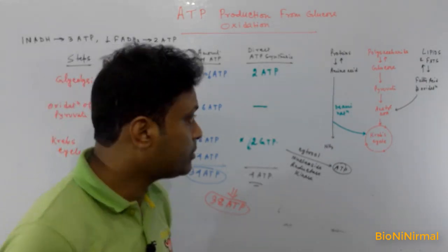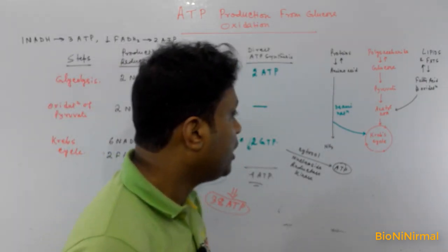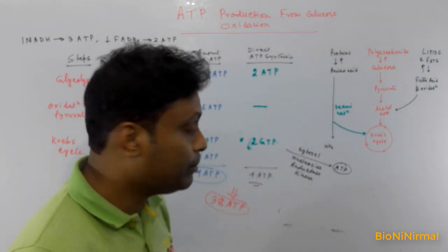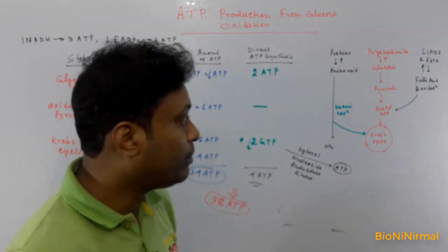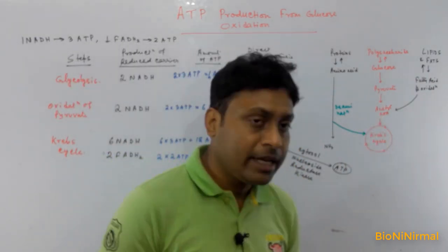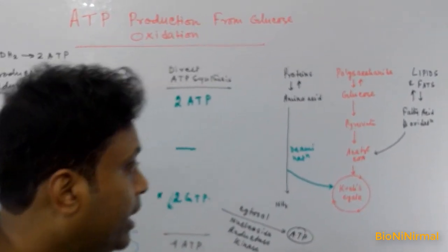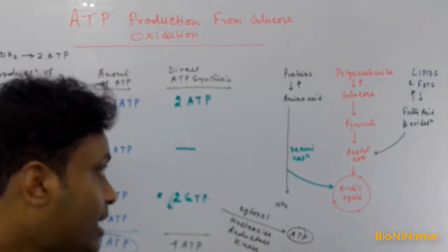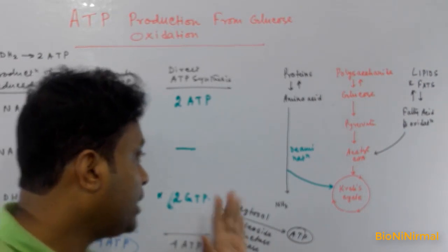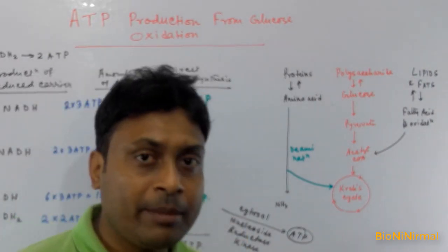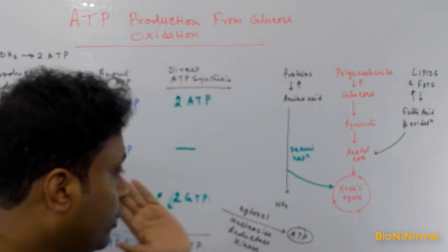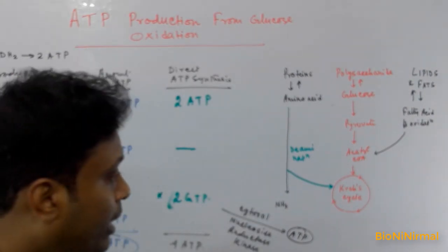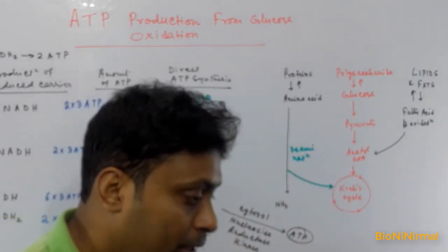Lipids and fats are transformed via beta oxidation into acetyl-CoA, which enters the Krebs cycle. Proteins can be transformed into amino acids, and by the process of deamination, ammonia is produced along with acetyl-CoA, which also enters the Krebs cycle. So glucose is not the only source of ATP — lipids and proteins also produce ATP via the Krebs cycle.